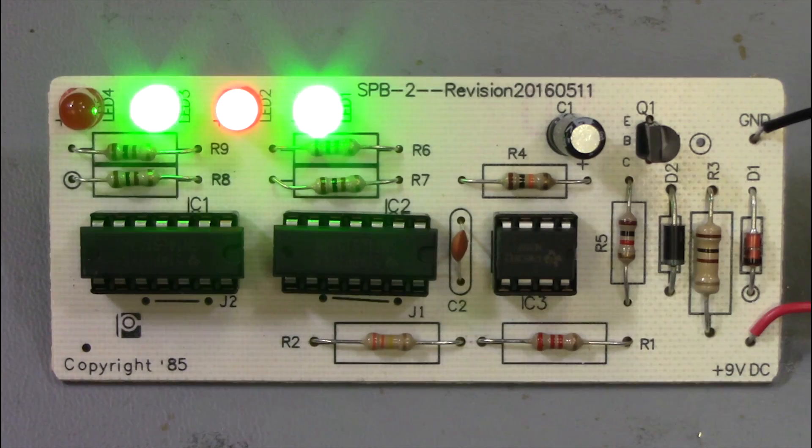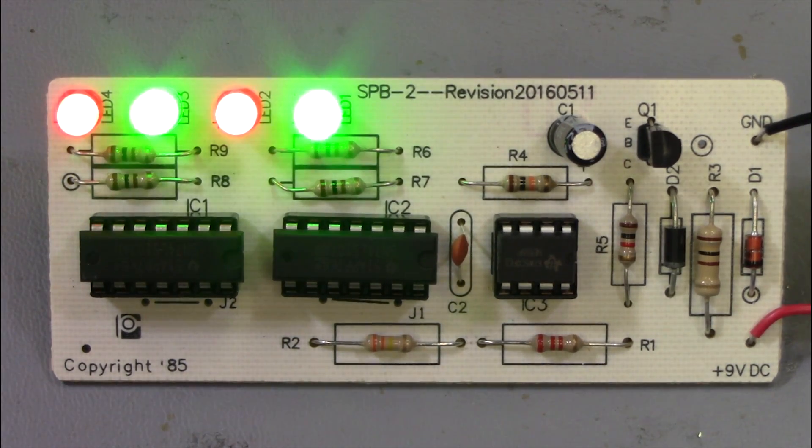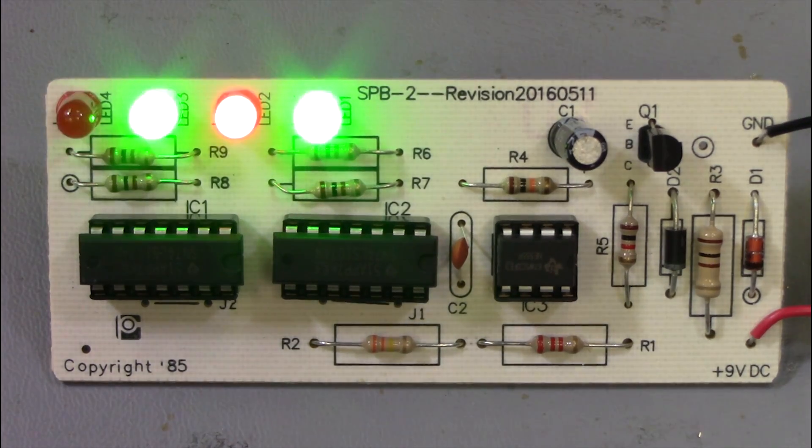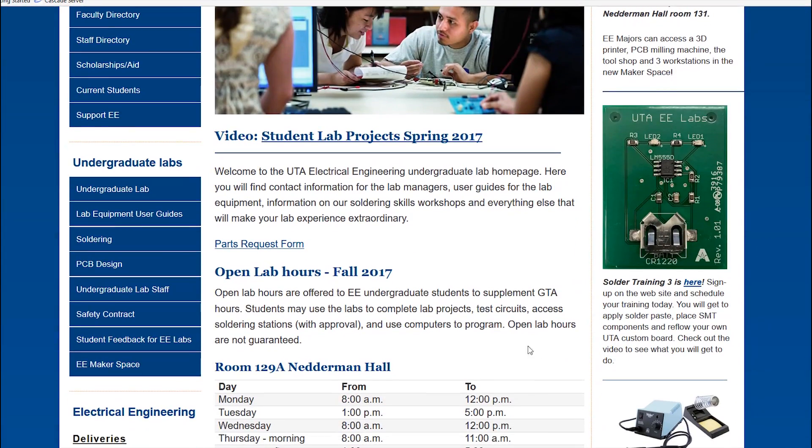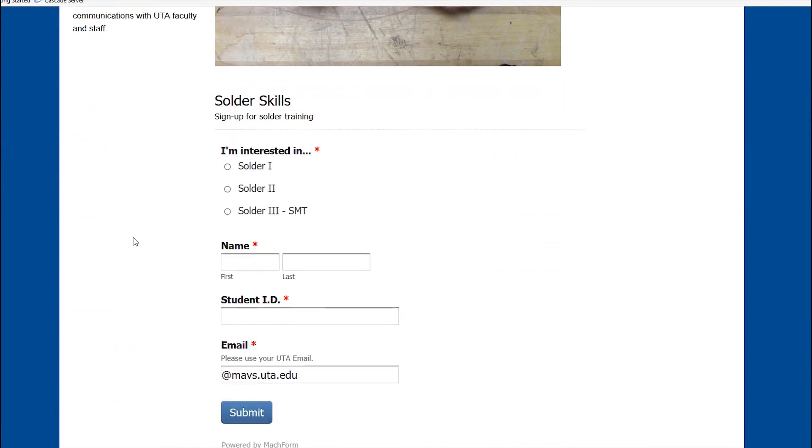Join us for our third video where we will build a solder practice board, the SPB-2 from Electronics Express. UTA Electronics Engineering majors sign up on the UTA Electrical Engineering Lab website to receive your kit for free.